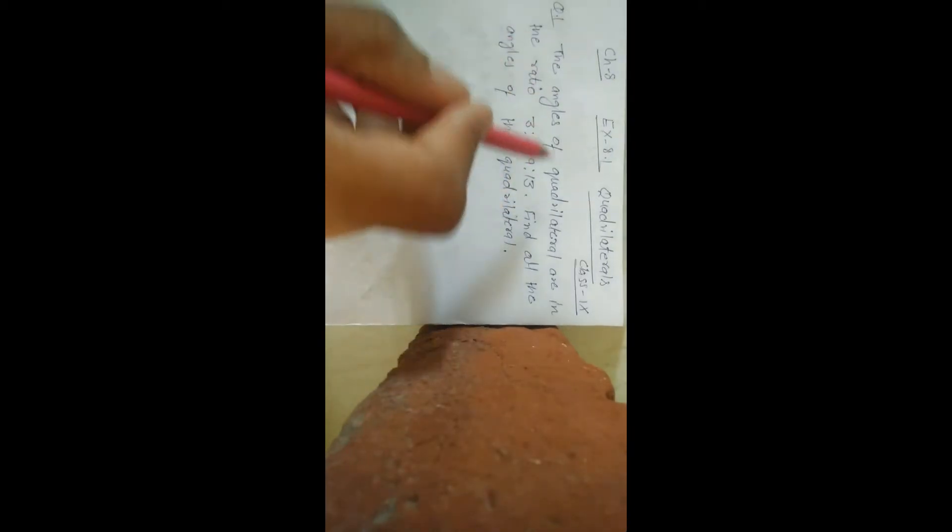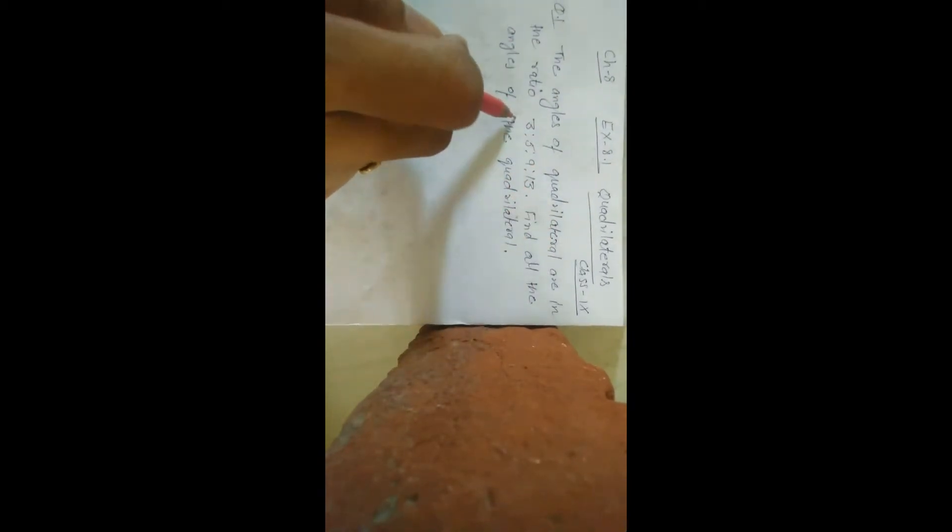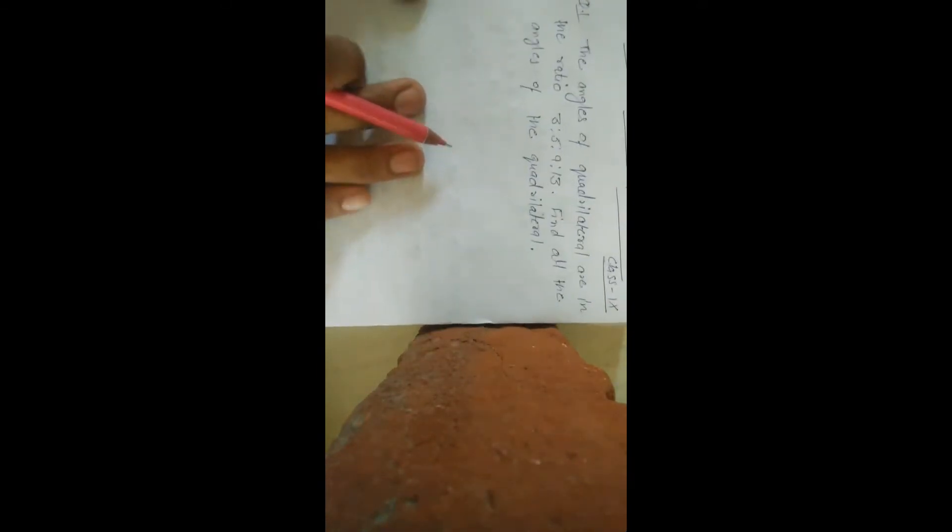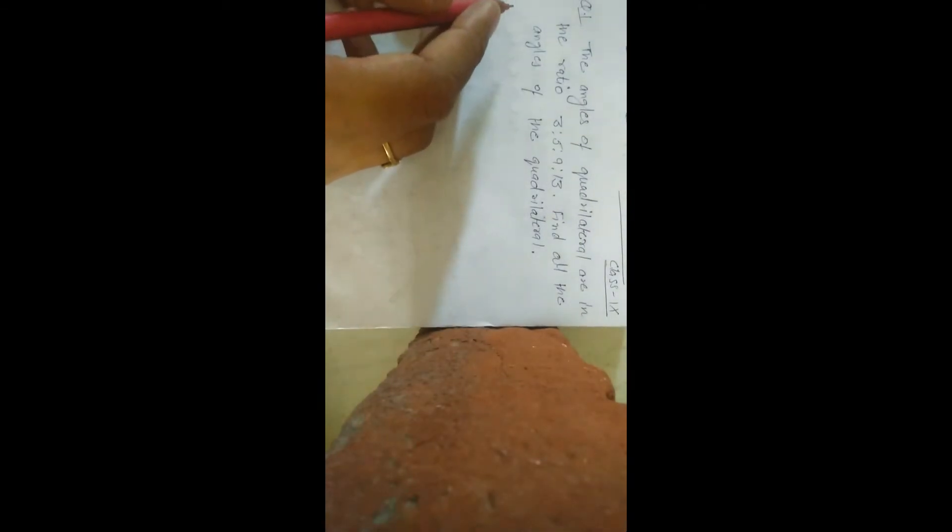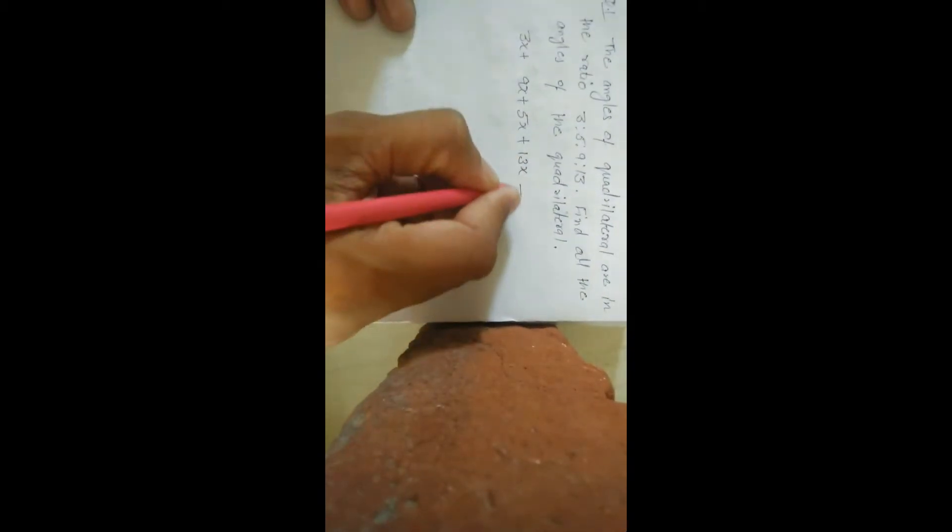The angles of quadrilaterals are in the ratio. Find all the angles of quadrilaterals. As we know that sum of angles of quadrilaterals is 360 degrees. The ratio is 3x, 5x, 9x, 13x. How much will it be? 360 degrees.